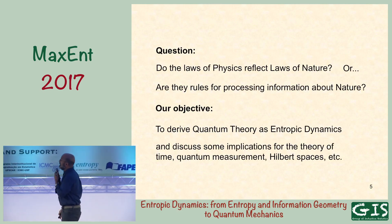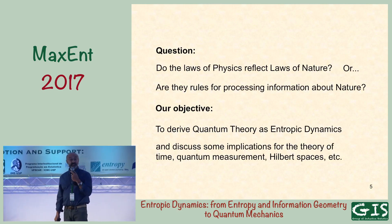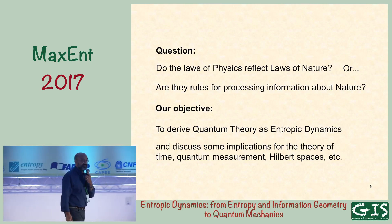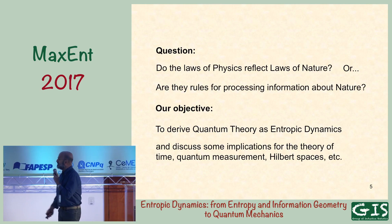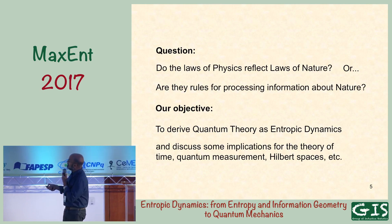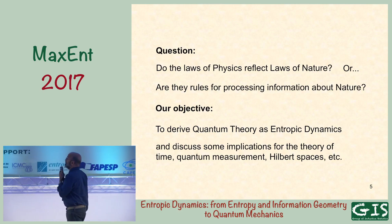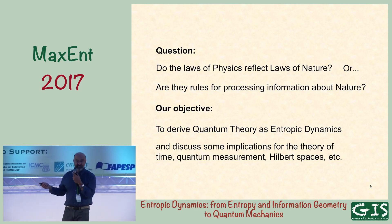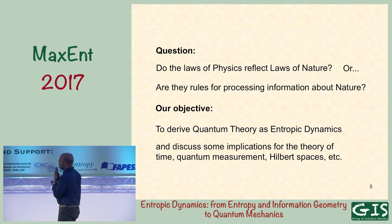So this is the question: do the laws of physics reflect laws of nature? Those of you who are not physicists have probably noticed that physicists are kind of arrogant people who claim to have the fundamental theories of everything, and everybody else is working on details. The question I want to ask is: is that true? Or are the rules of physics, laws of nature, really rules for processing information about nature? I favor the latter — the more modest version — although there is nothing modest in what I'm saying here.